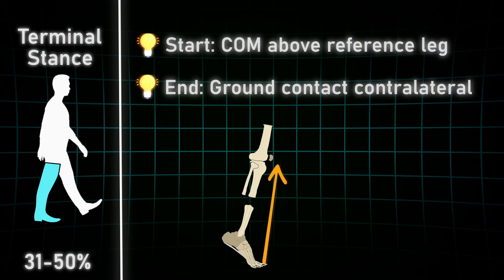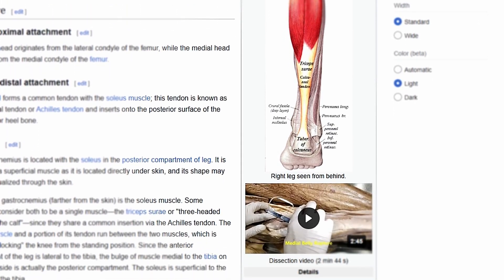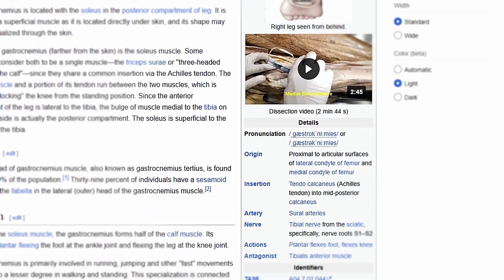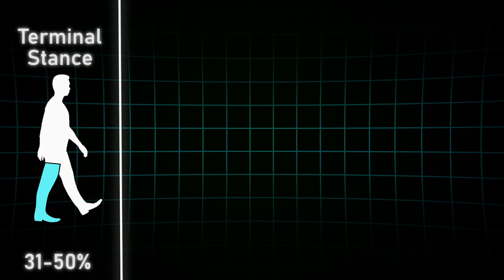This creates high torques at the knee, which has to fight against the high extension moments. Which muscle do you think does that? When we look up what the musculus gastrocnemius actually does, it says plantar flexion and knee flexion. This is the exact moment where this muscle really shines.